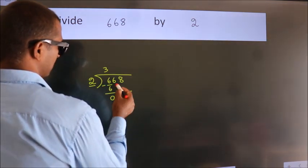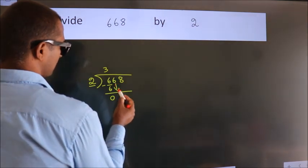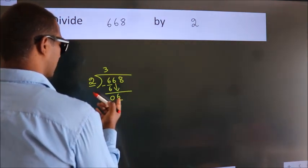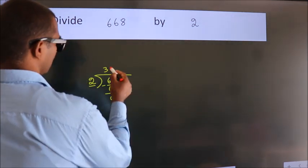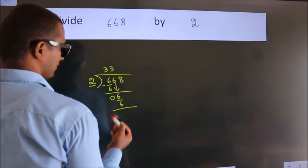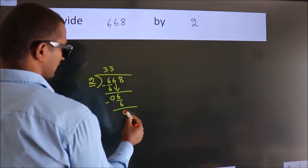After this, bring down the beside number. So 6 down. When do we get 6 in the 2 table? 2 threes, 6. Now we subtract. We get 0.